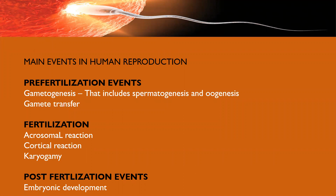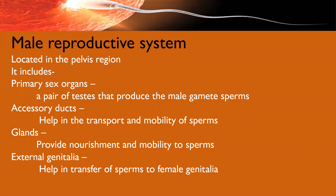The main events in human reproduction — as we have done in plants also — are pre-fertilization events that include gametogenesis. In this we are going to cover spermatogenesis, the process of sperm formation, and the process of ovum formation. The sperms are transferred in the female genital tract, then the fusion of the male and female gametes occurs — that is fertilization — followed by embryonic development in the post-fertilization events.